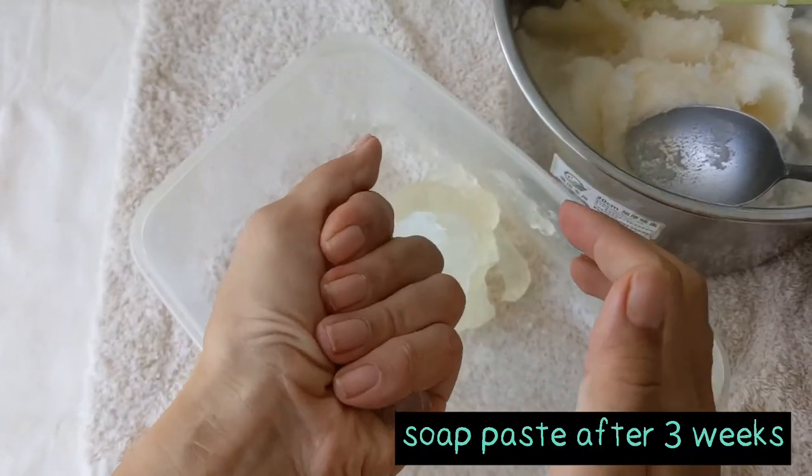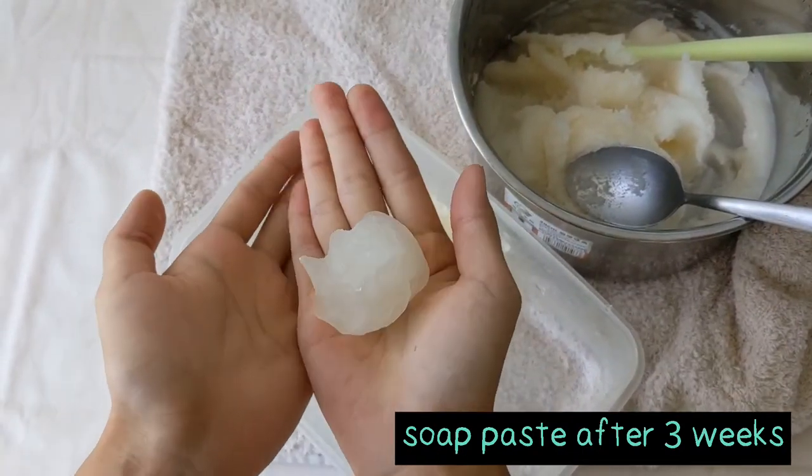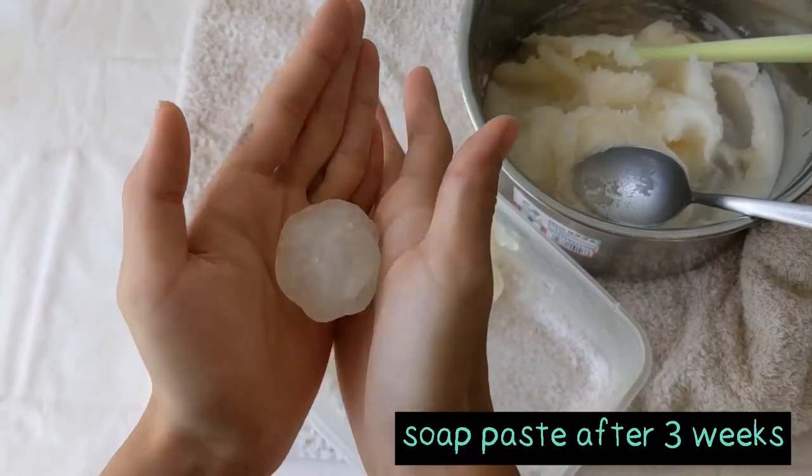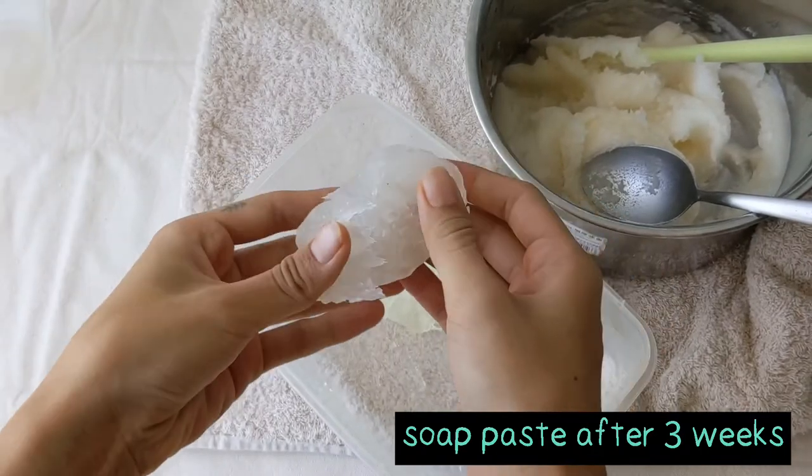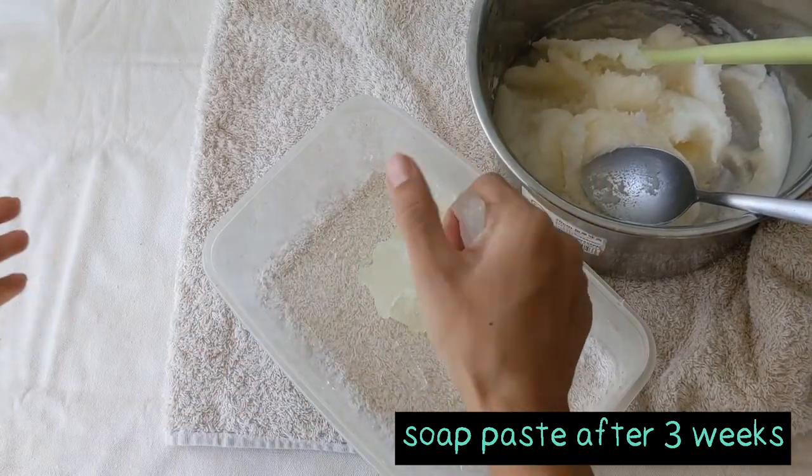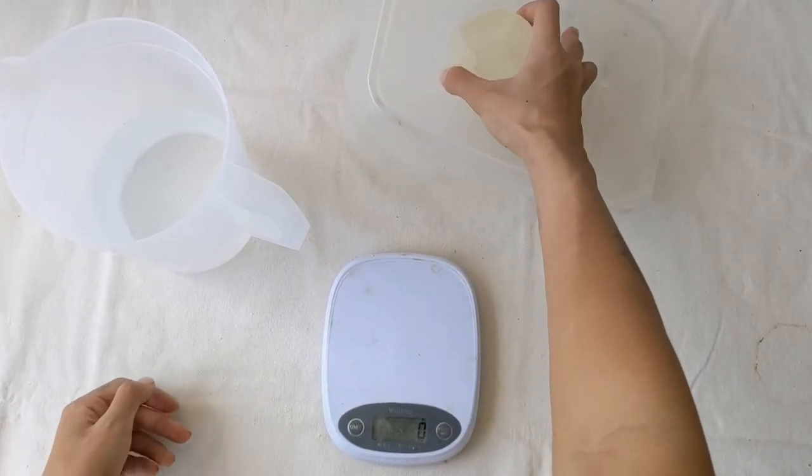And if you let it sit for about three weeks, the color will turn more translucent. If you use the soap paste right now without letting it rest for a few weeks, its pH might still be a bit high and it might not be very gentle on your skin. So we recommend putting it in an airtight container and letting it rest.